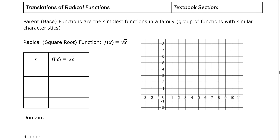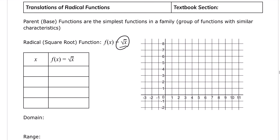Translations of radical functions. So let's have another look at the radical, or what we call the square root function, and explore some of the transformations. The radical function is defined by f of x equals the square root of x. This is the operation we're doing on x — square root of x — and that results in a graph. And this graph will have some key points.